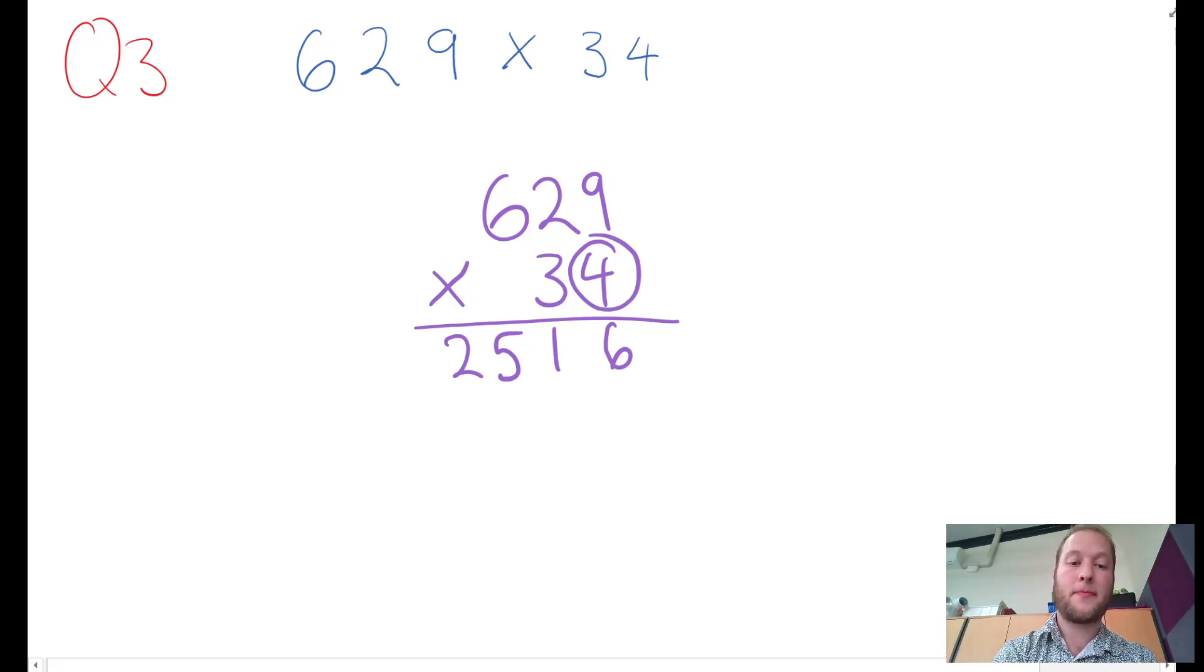I finished my 4, so I cross it off because it's in my ones column. I need to put in one zero. Now start again. Because of the place value, it's actually 30 times 600, so instead of having to say 30 times 9, 30 times 2, 30 times 6, I'd rather say 3 times 9, 3 times 2, 3 times 6. That's why I've put the zero in here.